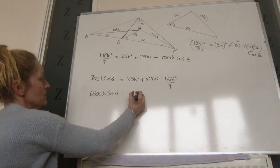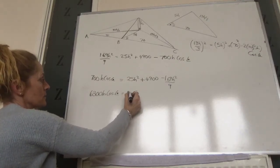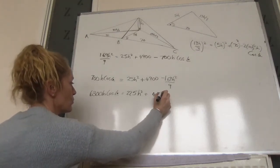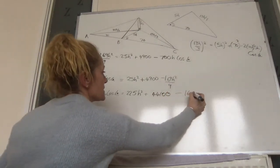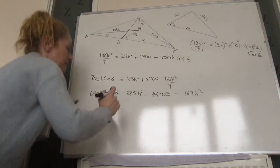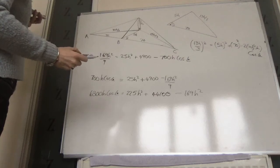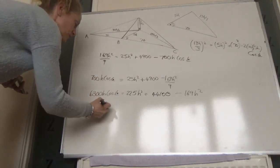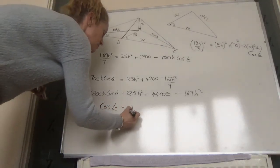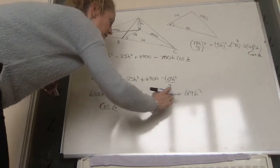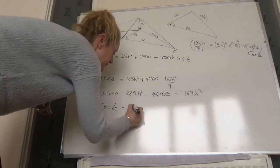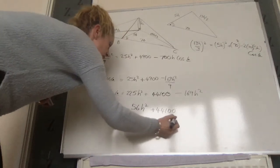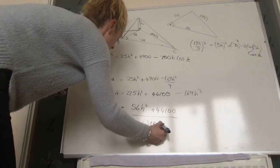Equals 9 times 25, 225h squared plus 4900 by 9, 44100, minus 169h squared. Now we have cosine dot is equal to 225h squared take away 169 is 56h squared, 56h squared plus 44100, divided by 6300h.